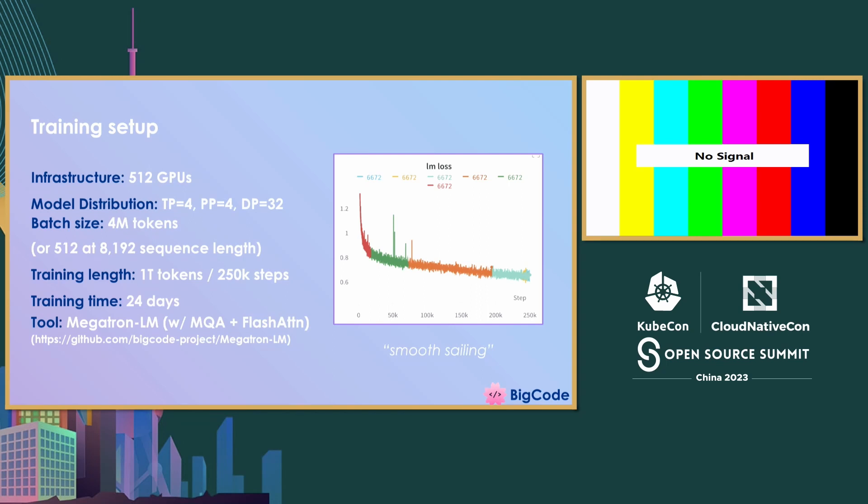Regarding the training, we did this on 500 GPUs on the Hugging Face cluster and it took 24 days. It was kind of smooth sailing — we had only a few restarts, which were automatic, which is why there are different colors on the loss curve. But the loss just kept going down for the entire training period. We used Megatron-LM for the training with multi-query attention and flash attention.